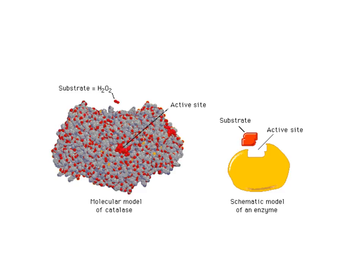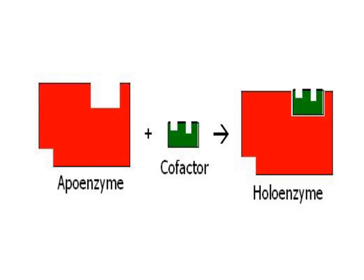Enzymes are made of protein molecules bonded to one or more parts called cofactors. This enzyme complex is usually simply referred to as the enzyme. A cofactor is a non-protein substance which may be organic and called a coenzyme. The coenzyme is often derived from a vitamin. The activating role of a cofactor is to either activate the protein by changing its geometric shape, or by actually participating in the overall reaction.